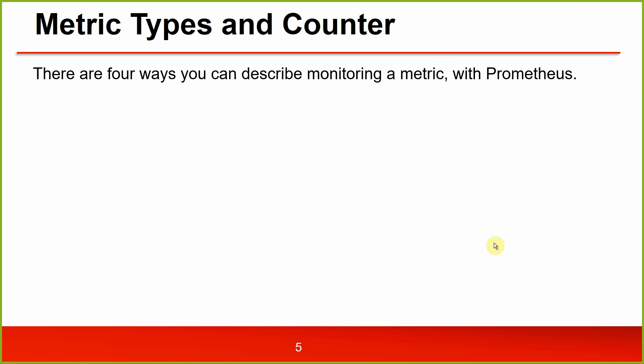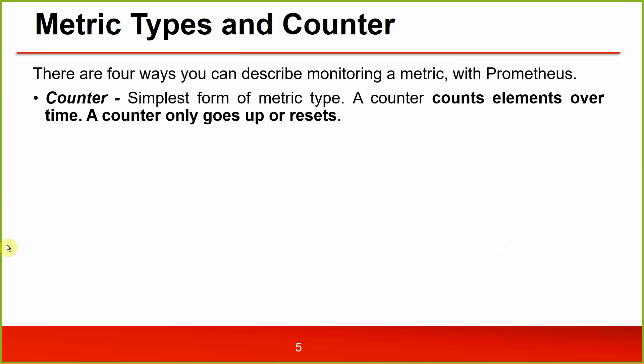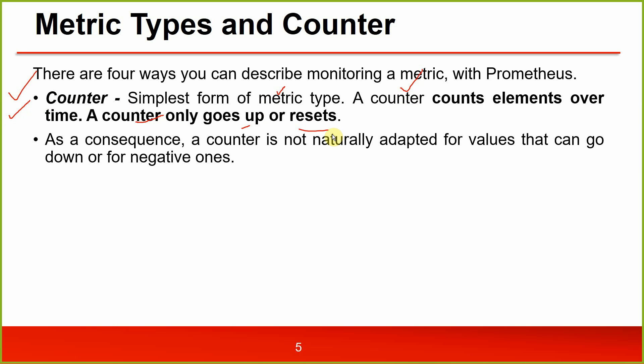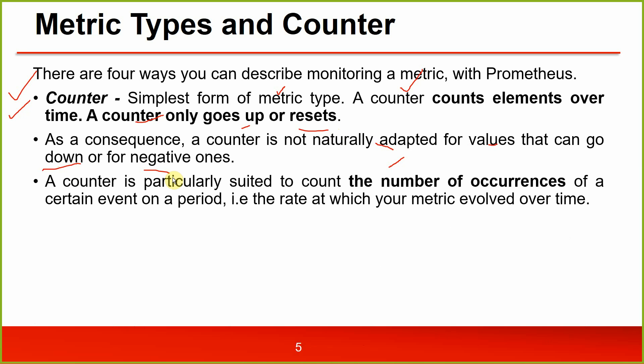There are four metric types in Prometheus. The first is the counter — the simplest form. A counter counts elements over time; it only goes up or resets, it never goes down. The distance traveled by a car is a counter — it can never decrease. A counter is particularly suited to count occurrences of a certain event over a period, measuring the rate at which your metric evolves over time.